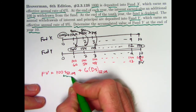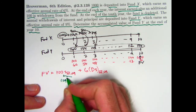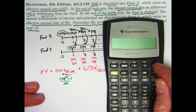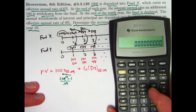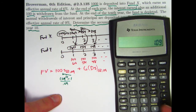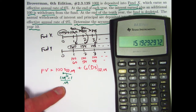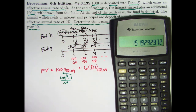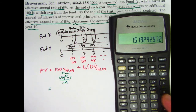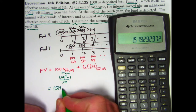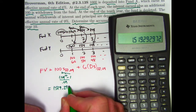Let's go ahead and evaluate this. 100 times S₁₀ at 9% would be 1.09 to the 10th power minus 1 divided by 0.09, then multiplied by 100. Let's calculate that: 1.09 to the 10th power minus 1 divided by 0.09. I'll store this in register 0 since I'll need it later. Multiplying by 100 gives approximately 1,519.29. We'll round to the nearest cent.